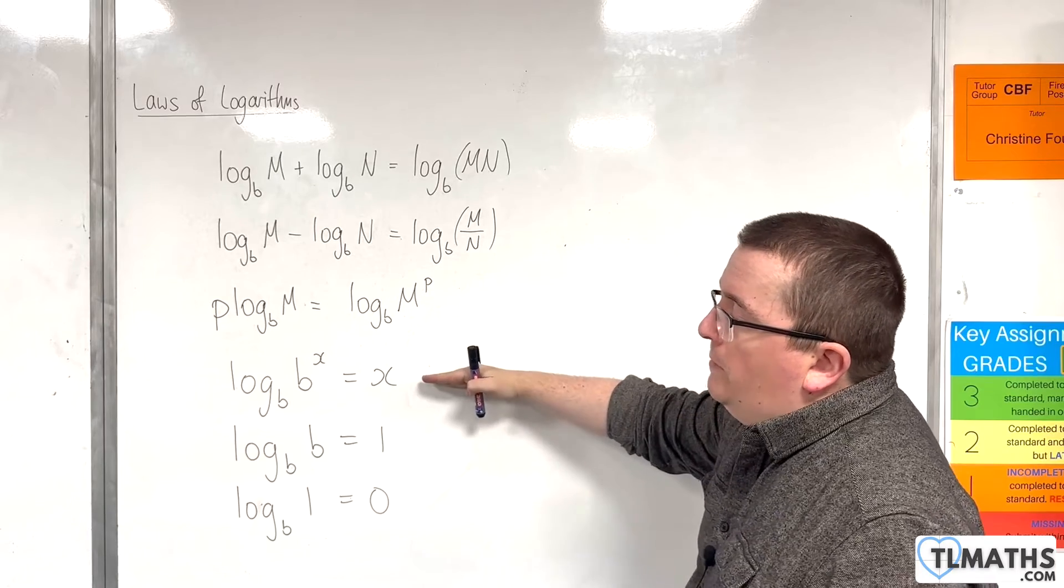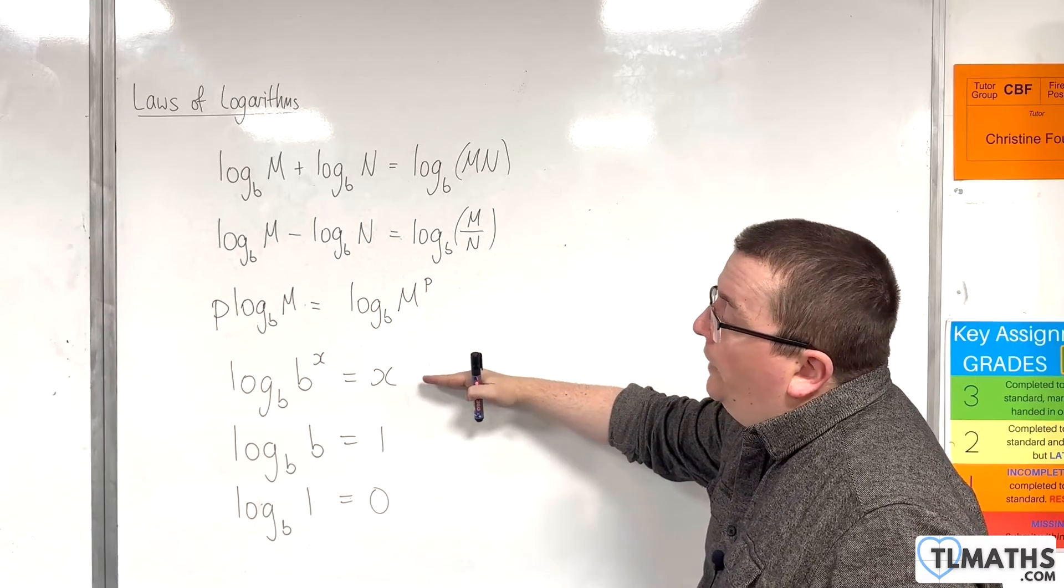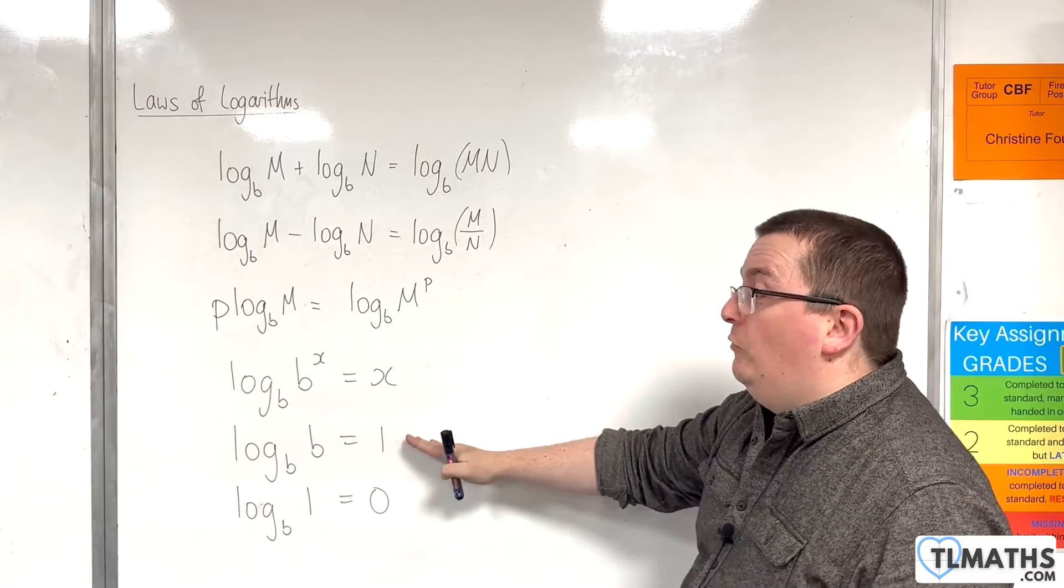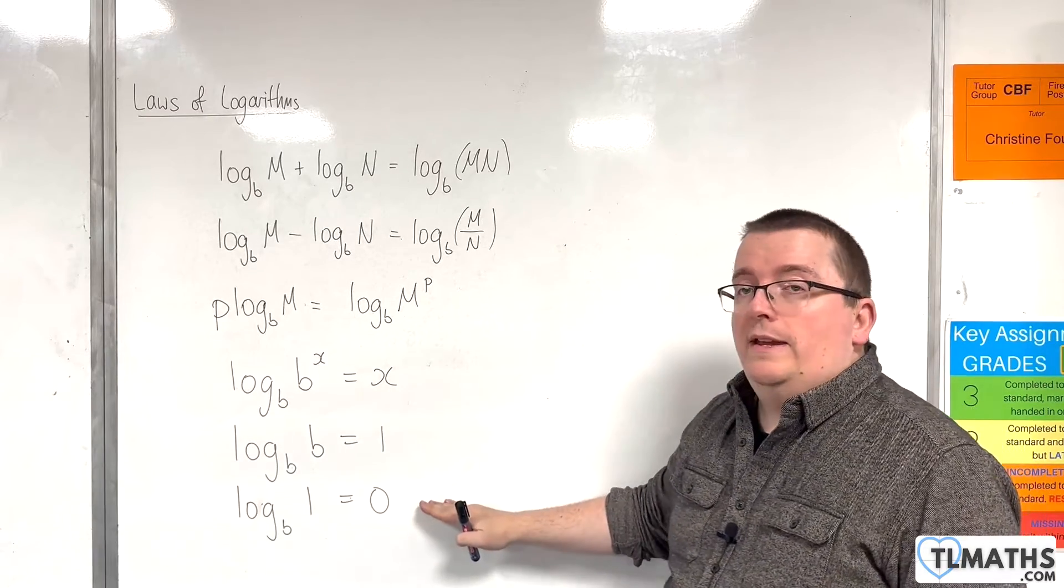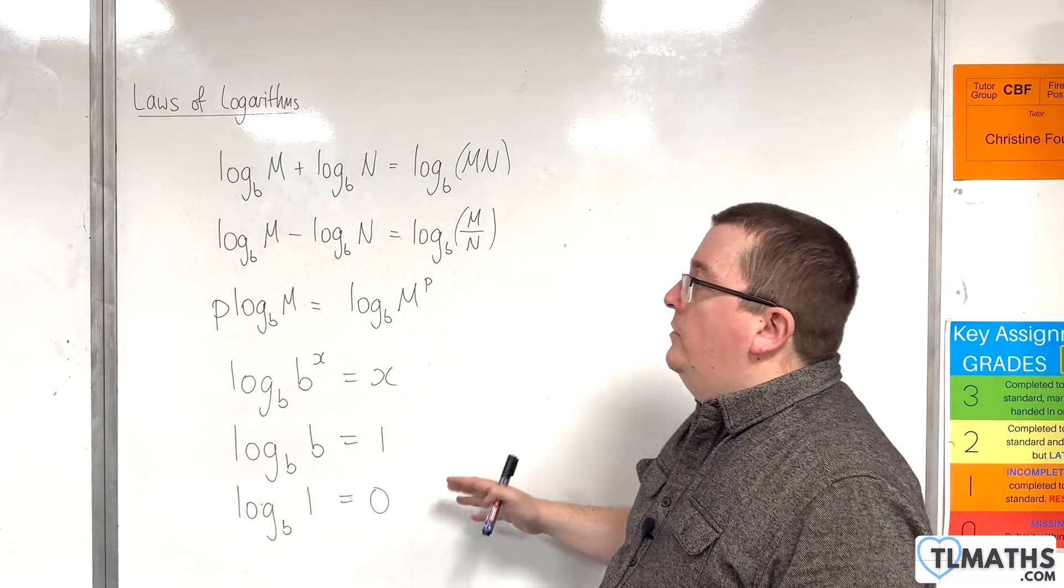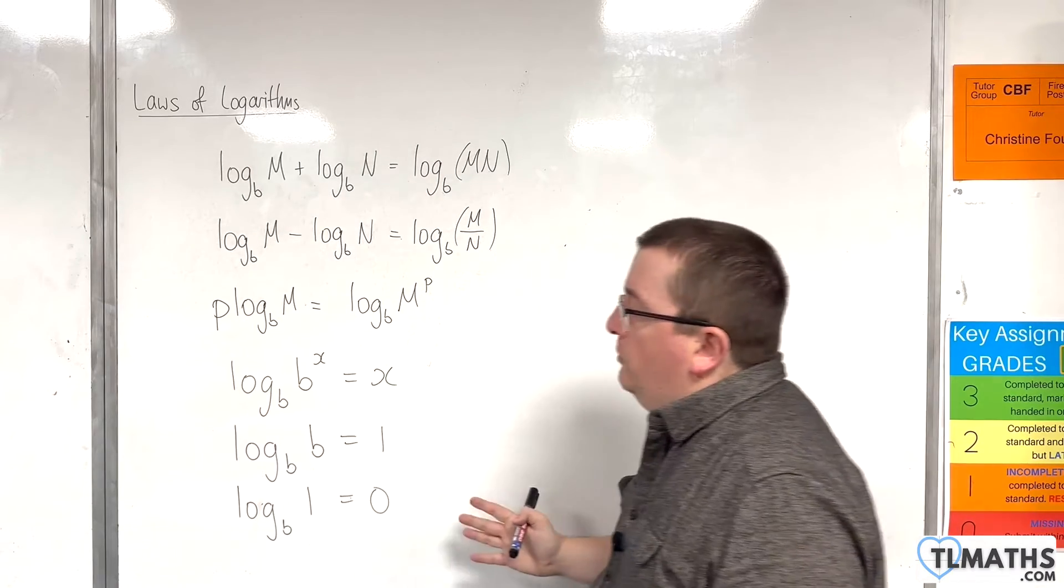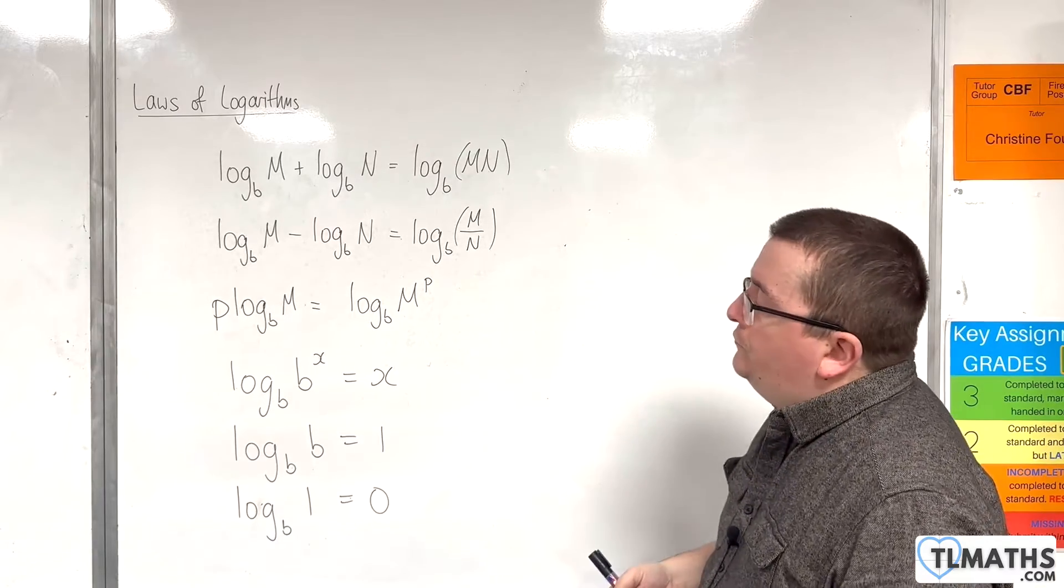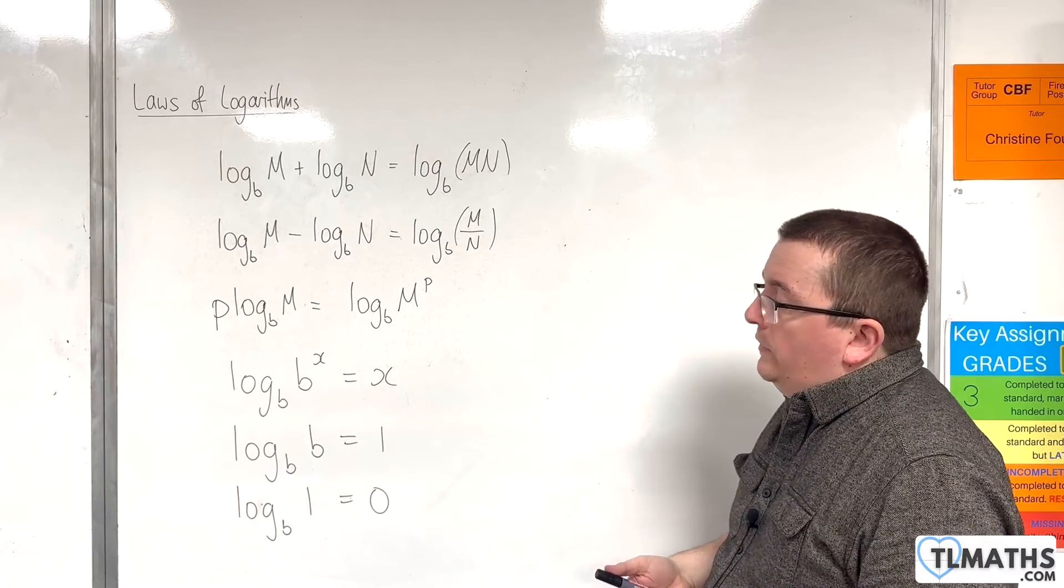We have the general statement that log base b of b to the x will be equal to x. And the consequences from that: log base b of b is 1, and log base b of 1 is 0. These laws of logarithms work for any base b, where b is greater than 0.